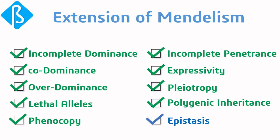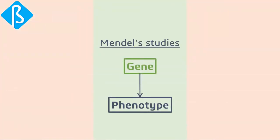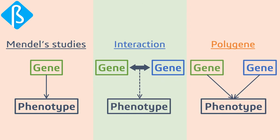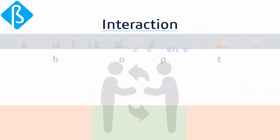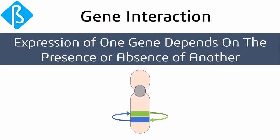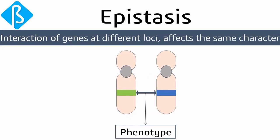Today we'll talk about epistasis, the last of the non-Mendelian topics. Mendel's studies showed one gene responsible for one trait, but as science expanded, we learned that one gene for one phenotype is not necessary. There can be many genes responsible for one trait, and sometimes genes interact with each other to express a phenotype. When expression of one gene depends on the presence or absence of another, it is known as gene interaction.